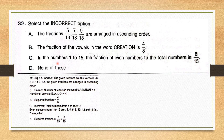Let's check option C. In the numbers 1 to 15, the fraction of even numbers to the total number is stated as 8 by 15. Total numbers from 1 to 15 is 15. The even numbers between 1 to 15 are 2, 4, 6, 8, 10, 12, and 14, which results in 7 numbers. So the required fraction is 7 by 15. Therefore option C is incorrect.